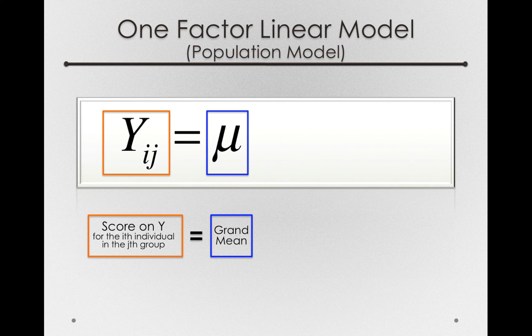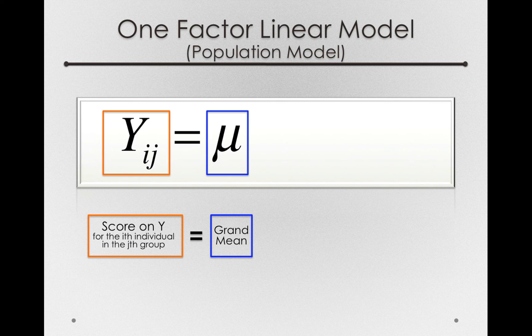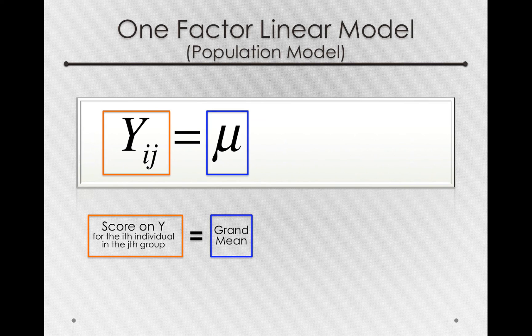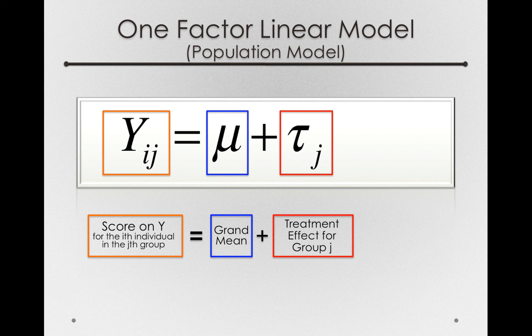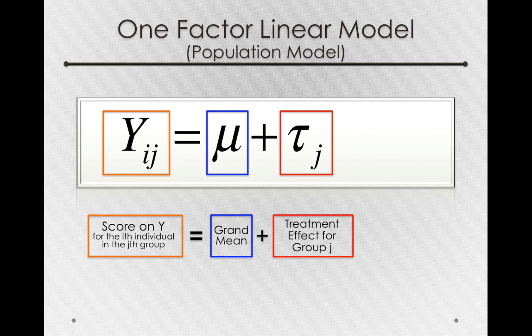So there's our grand mean. We now have to represent the treatment offsets. Remember that we only have three of these. There's an offset for the delta group, an offset for the southwest group, and an offset for the virgin group. Individuals don't have offsets, groups do. So this will be a tau with one subscript, a j. And that's the treatment effect for the group j.